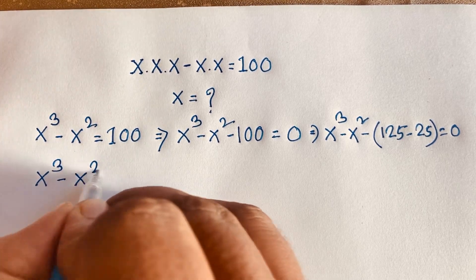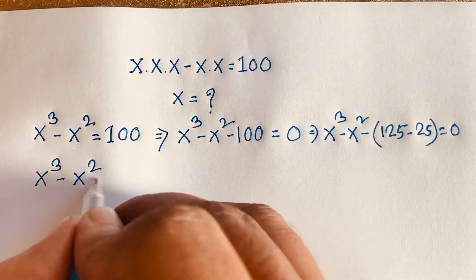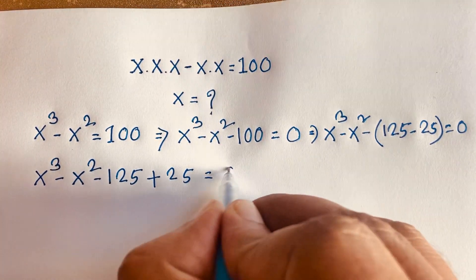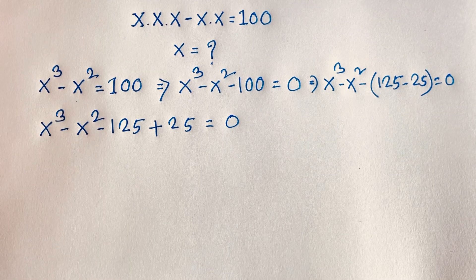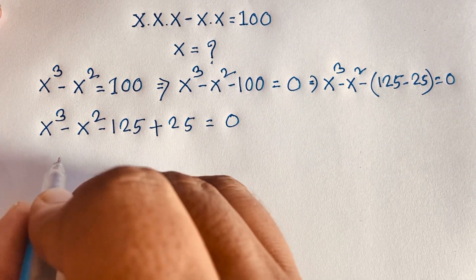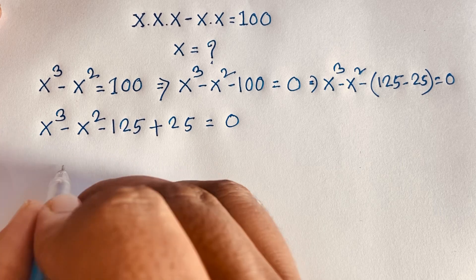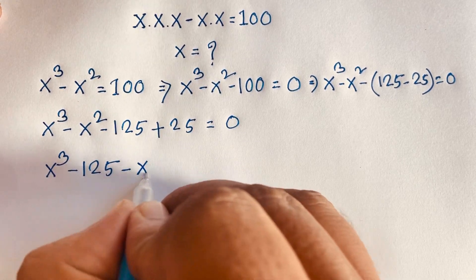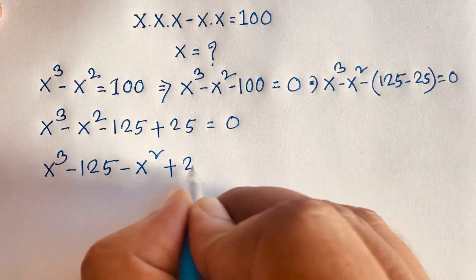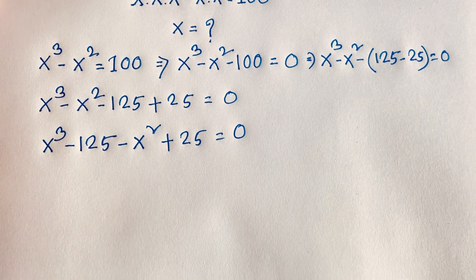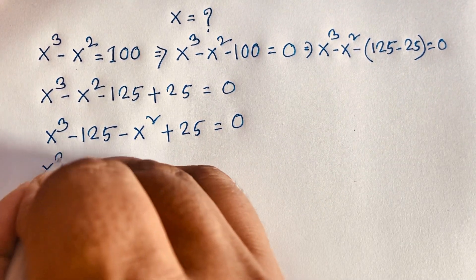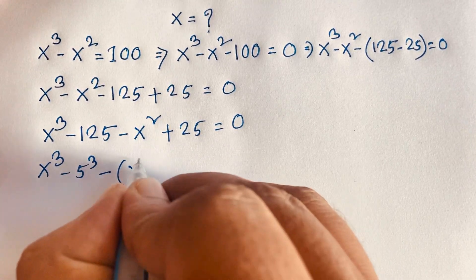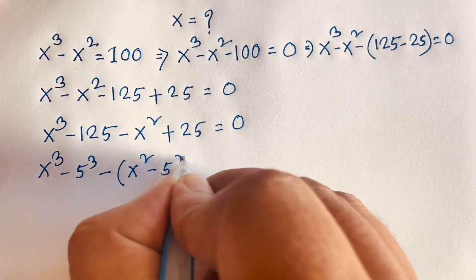I rearrange the terms: x to the power 3 minus 125, and then negative x squared plus 25 equals 0. Here x³ minus 125 is x³ minus 5³, and negative x² plus 25 is negative times (x² minus 5²) equals 0.